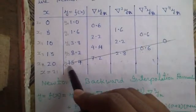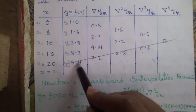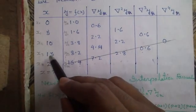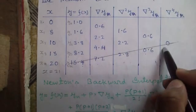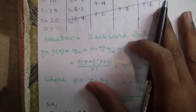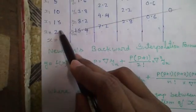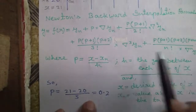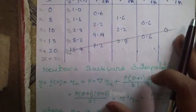One more thing: since our x is near 20, x_n equals 20 and y_n equals 15.4. We will draw a line starting from y_n to the last element. If x were 17, then x_n would be 15 and y_n would be 8.2, and we would draw the line covering those elements. Next, find p: p equals (x − x_n) / h. Here x is 21, x_n is 20, and h — the gap between each term — is 5. So p = (21 − 20) / 5 = 0.2.